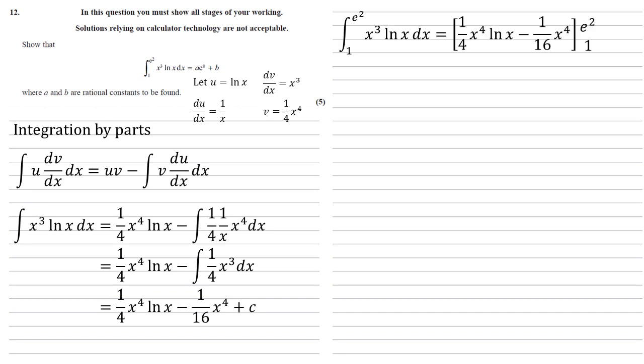Now we've integrated, we can put the bounds back on. So our integral between one and e squared, we're going to write this out with the square brackets. We've got our integral a quarter x to the power of four ln x minus a sixteenth x to the four inside the brackets, and we've got our bounds of one and e squared on the end.